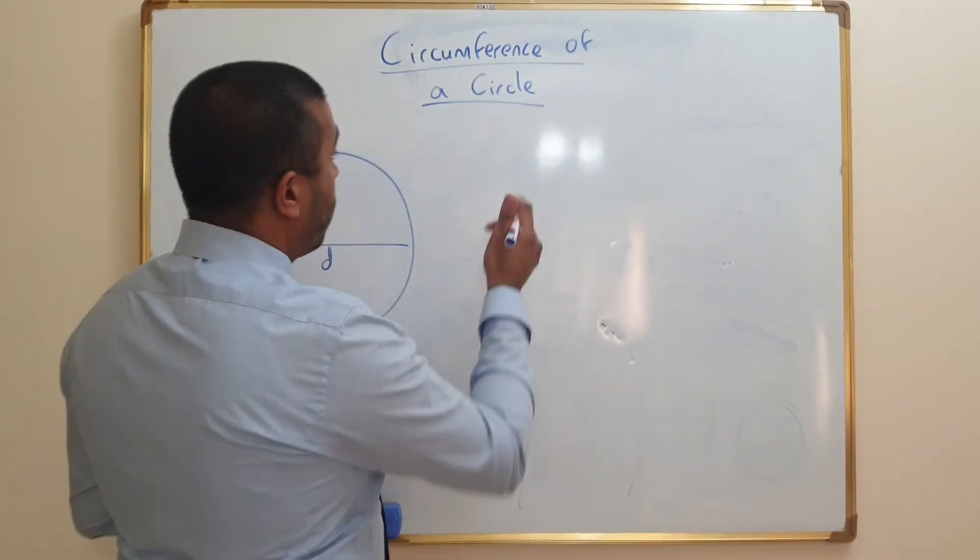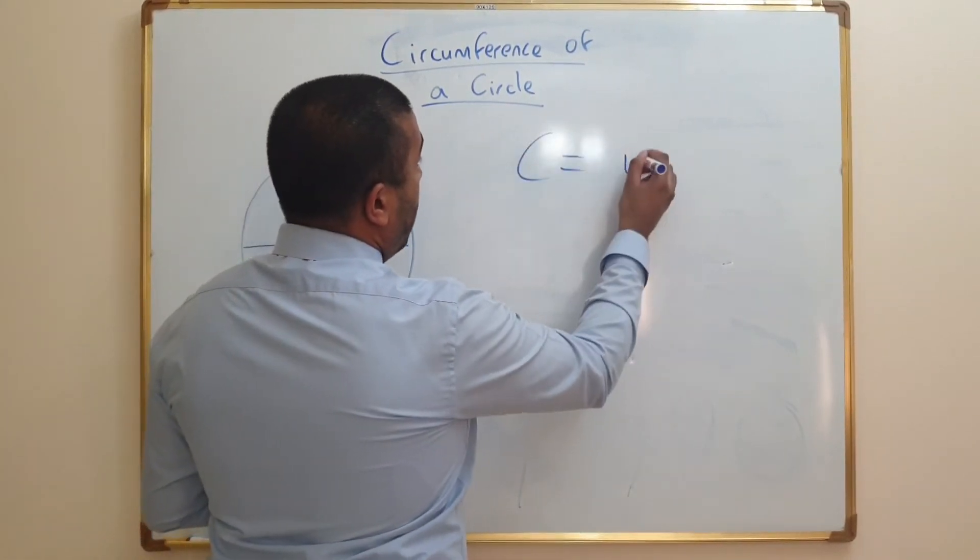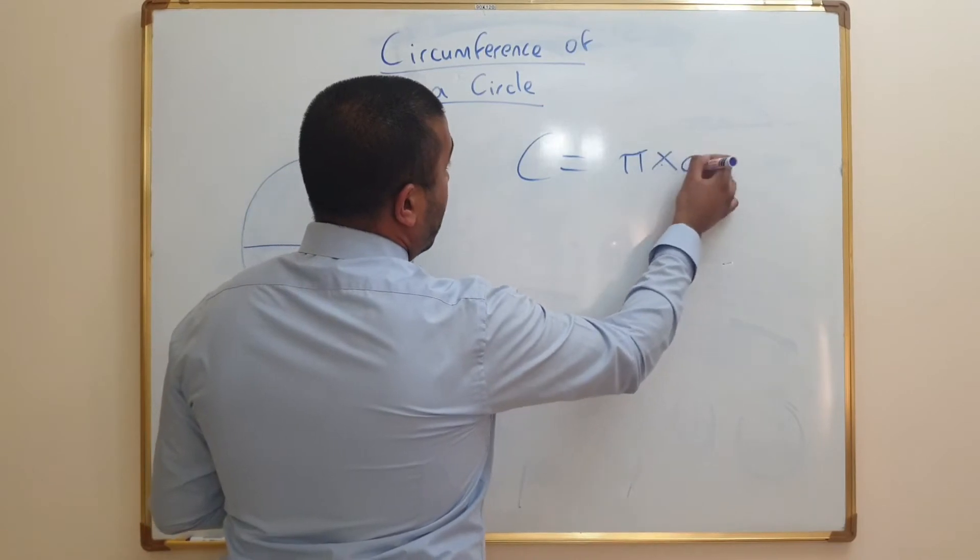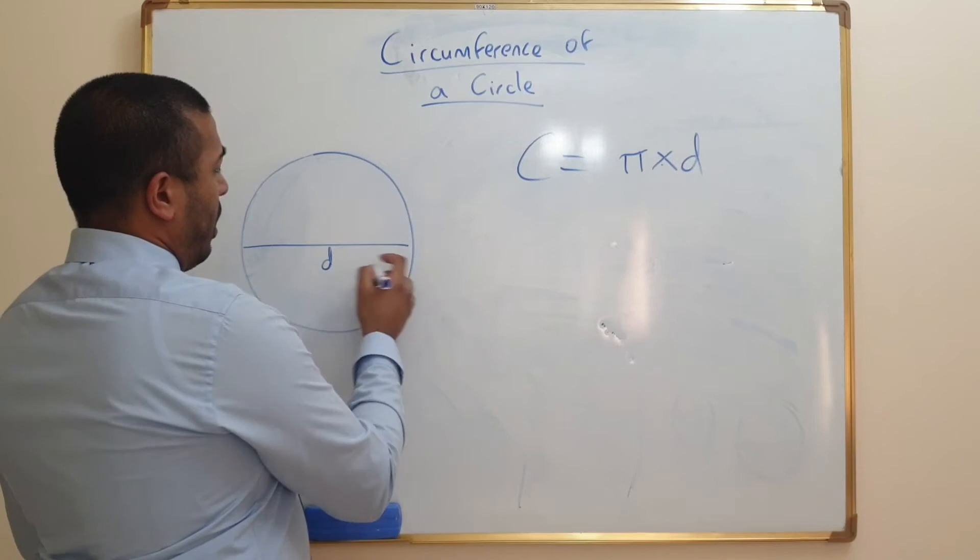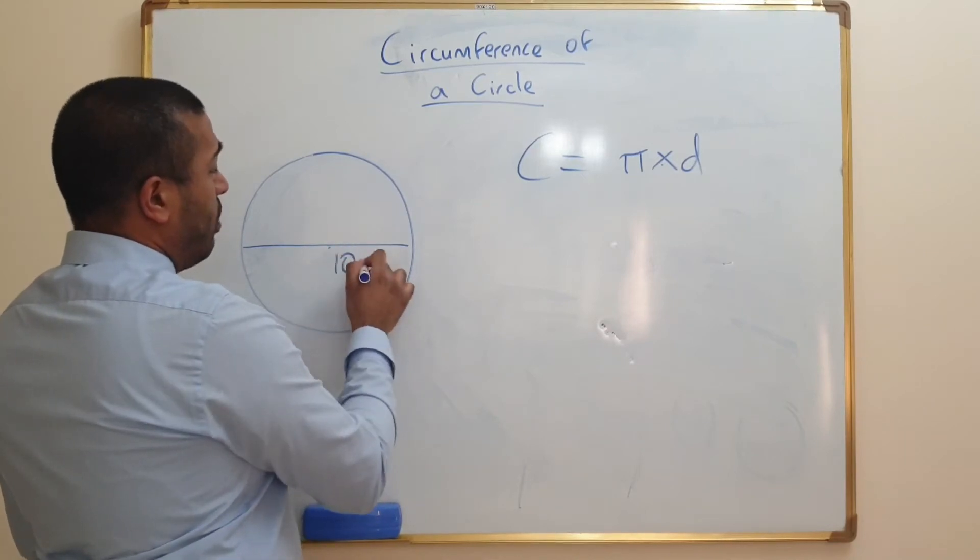The formula to find the circumference of a circle is pi times diameter. If I know the diameter, let's say for example the diameter is 10 centimeters.